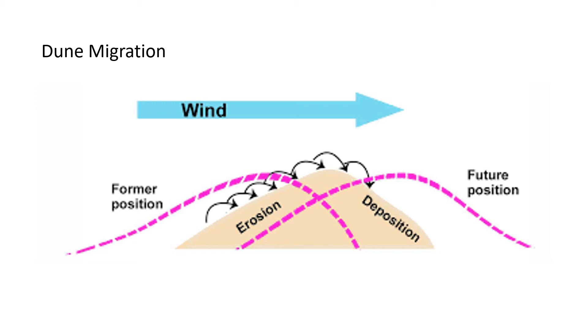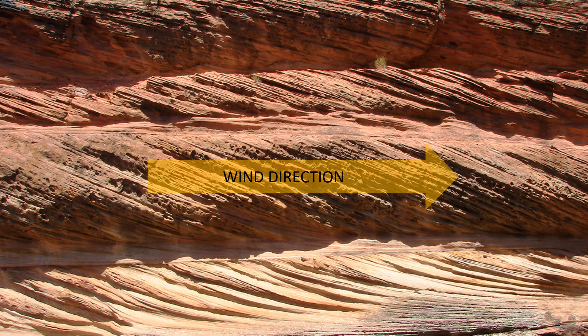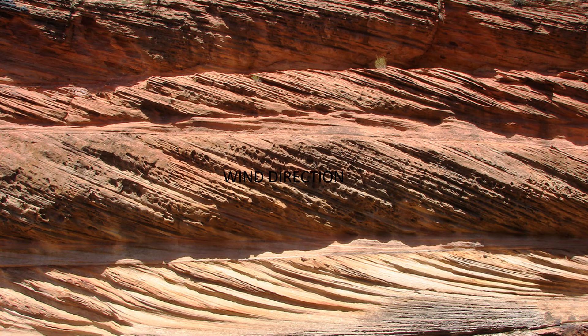Dunes migrate in the direction of the wind and will maintain a constant shape when wind conditions remain constant. The formation of cross-bedding allows geologists to analyze paleo wind patterns. As the cross-bedding of Aeolian dunes will fall at an angle toward the propagating wind, we can predict the directionality of the wind when the sand was deposited. Wind direction is typically described by the direction it traveled from, such as south or southwest.